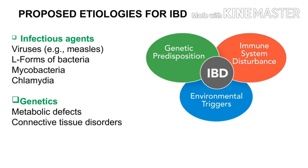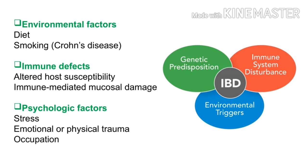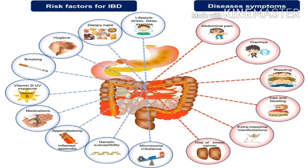The causes and etiology include genetic predisposition, immune system, environmental factors, infestation, virus, bacteria, genetics, metabolic defects, and connective tissue disorders. This is a proposed etiology. There is also a chance for environmental factors, diet, smoking, stress, immune effects, emotional factors, and occupation.